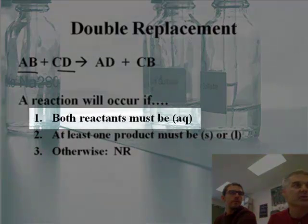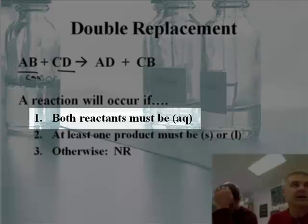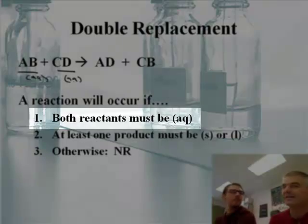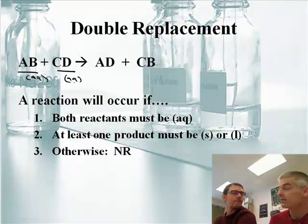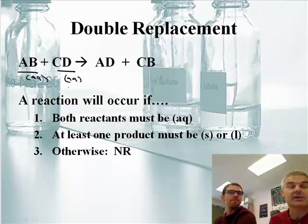First of all, both reactants must be AQ. So reactant A has to be AQ and AQ. If one of them is an S or an E, it does not work. Right. Okay, so we're trying to decide. So you kind of have to meet all of these criteria.